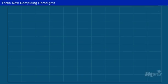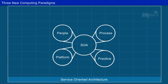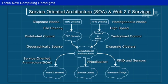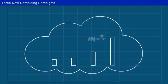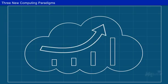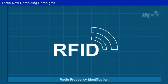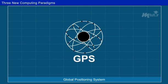The three computing paradigms are service-oriented architecture, Web 2.0 services and cloud computing. The diagram illustrates the introduction of SOA, i.e., service-oriented architecture, and Web 2.0 services. Advancements in virtualization drove the growth of Internet clouds as a new computing paradigm. The development of IoT, i.e., Internet of Things, was triggered by RFID, i.e., radio frequency identification, GPS, i.e., global positioning system, and sensor technologies.